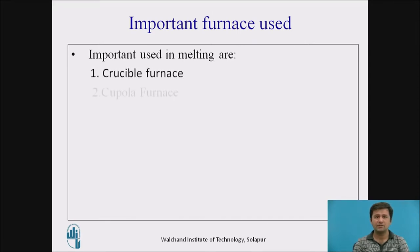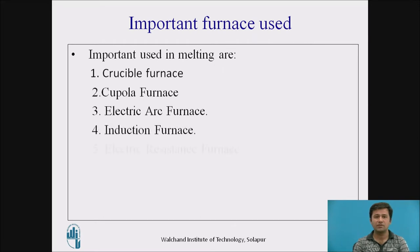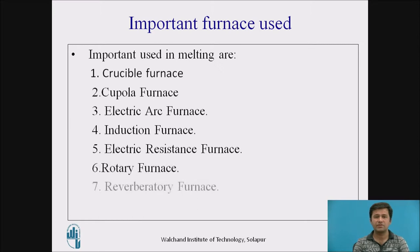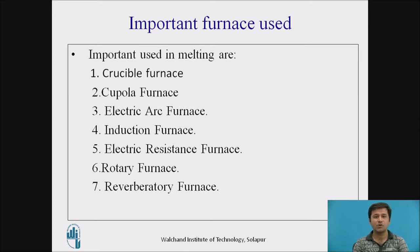The important furnaces used in industry are: crucible furnace, cupola furnace, electric arc furnace, induction furnace, electric resistance furnace, rotary furnace, and reverberatory furnace. These are used for ferrous and non-ferrous melting. In some cases, two furnaces are used together — called duplexing — to take advantages of both, specifically an electric arc or induction furnace used in conjunction with a cupola furnace.